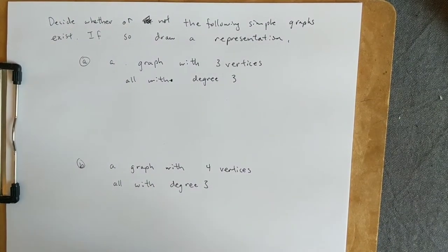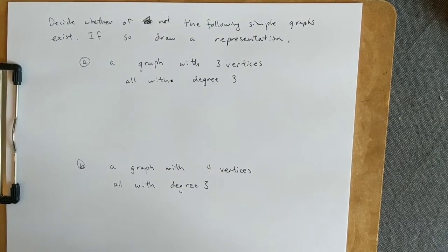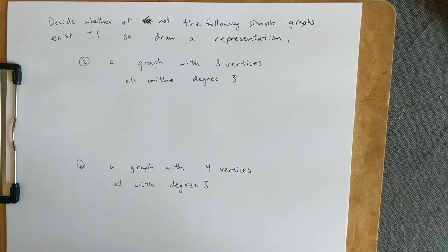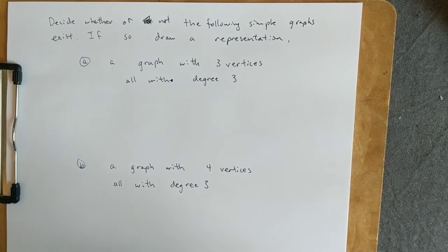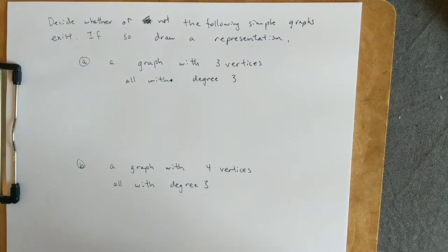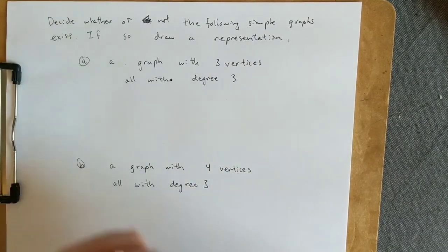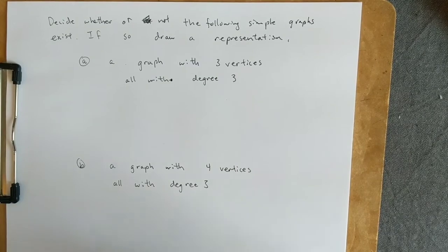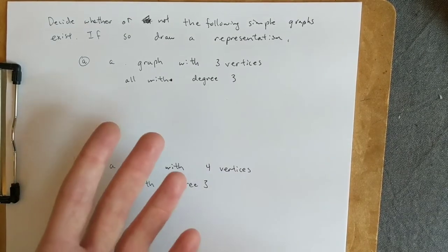Let's look at some other ways we can use the Handshaking Lemma. This time we're going to use it to show that we could describe a graph with words that can't actually exist. So we're going to decide whether or not the following simple graphs exist. If so, we'll draw a representation.